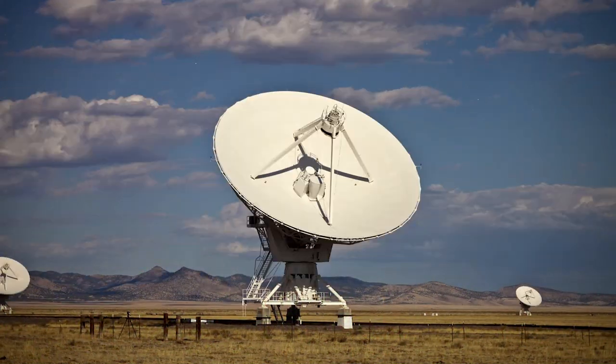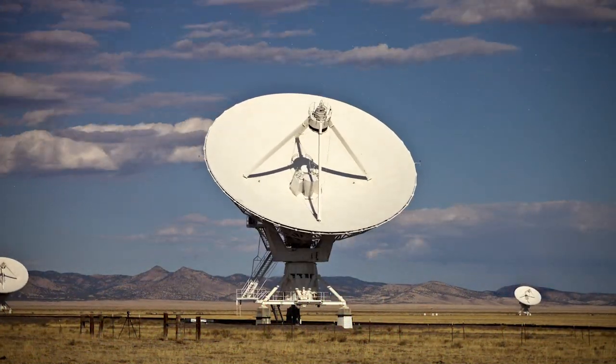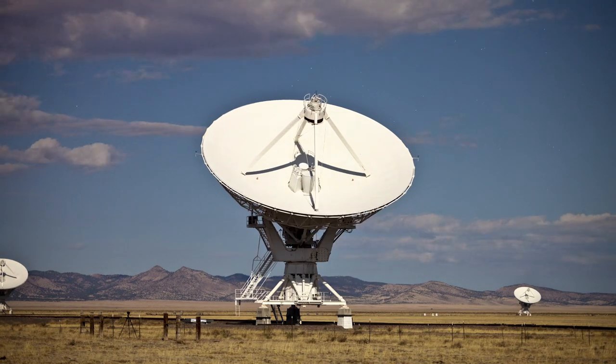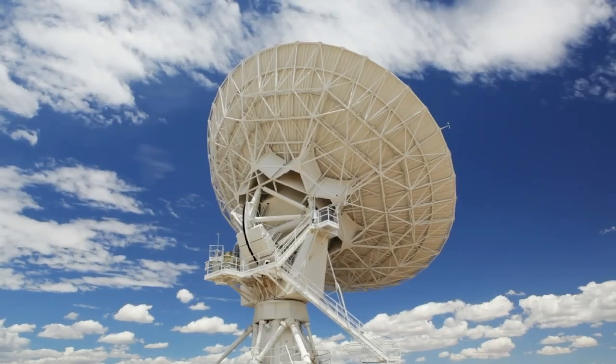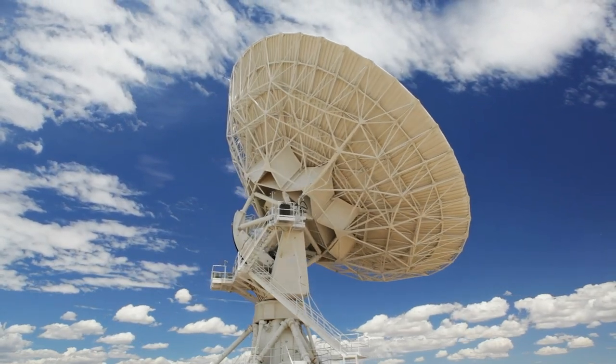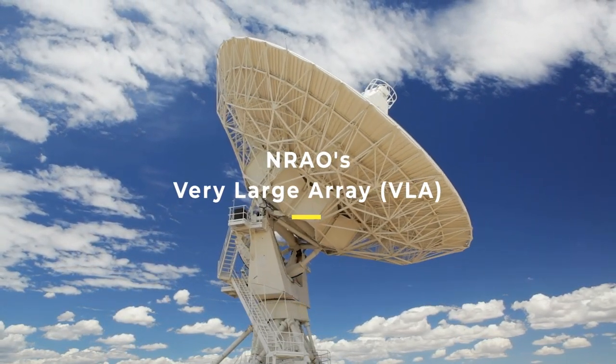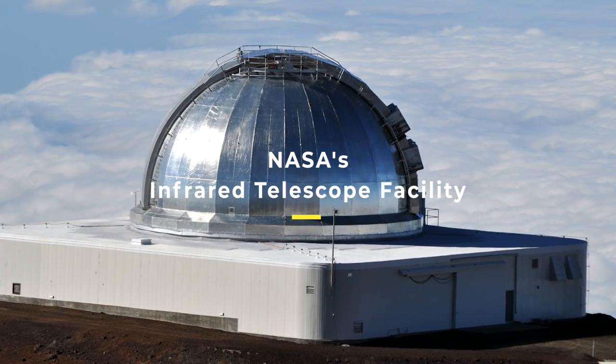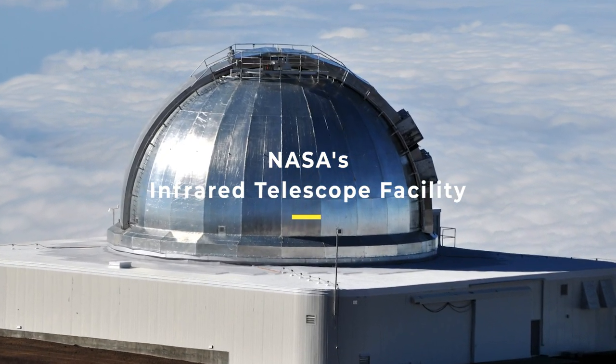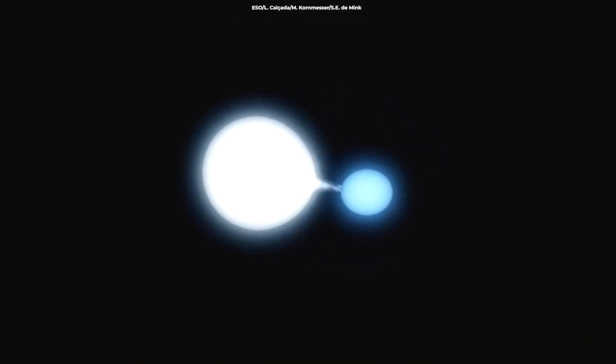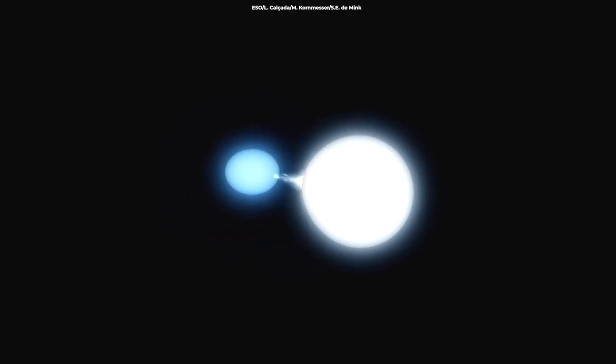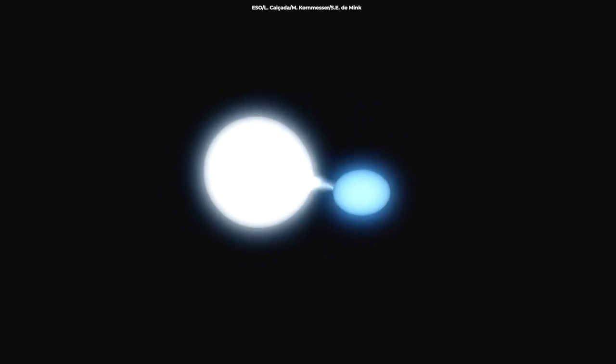Molnar and his colleagues will closely watch KIC 9832227 over the course of the year in multiple wavelengths. This will be done with the help of the NRAO's Very Large Array, NASA's Infrared Telescope Facility at Mauna Kea, and the ESA's XMM-Newton satellite. These observatories will study the radio, infrared, and X-ray emissions of the star, respectively.